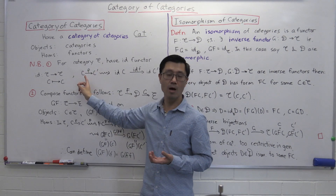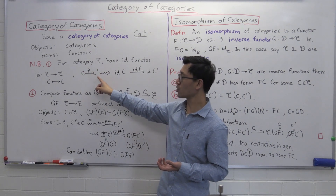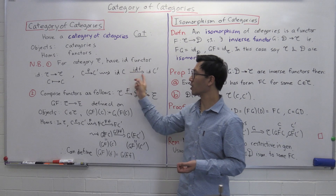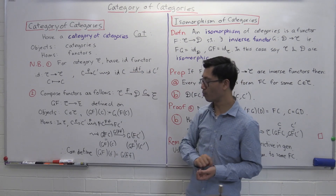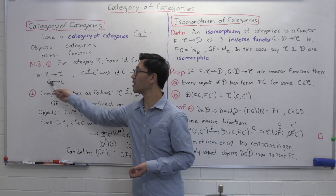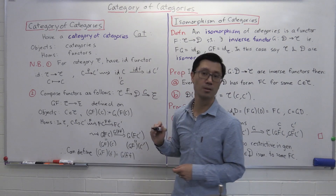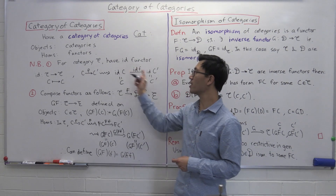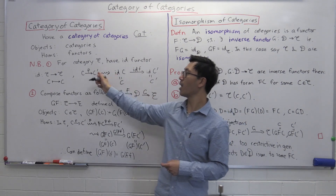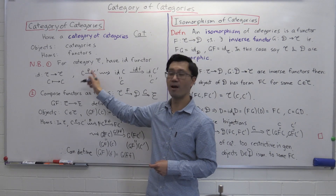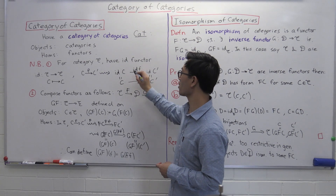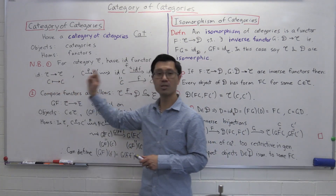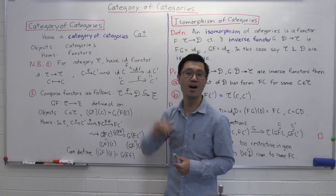It also has to operate on the Homs. Suppose you have a Hom from object C to object C prime — this Hom F. If you apply the identity functor to it, you get the identity of F, which goes from the identity of C to the identity of C prime. Of course the identity doesn't do anything, so this is just C, and C prime. So the identity of F is just F itself — it sends an object back to itself and a Hom back to itself. That's the identity functor.